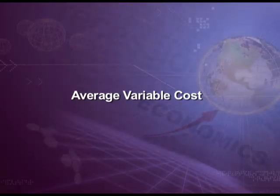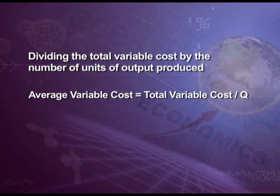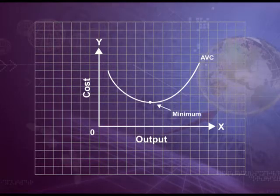Average variable cost is the per-unit variable cost. It is found by dividing total variable cost by the number of units of output produced. Symbolically, AVC = TVC / Q, where Q is the number of units produced. Average variable cost normally falls as output increases from zero to normal capacity output due to increasing returns. But beyond normal capacity output, average variable cost will rise steeply because of the law of diminishing returns. If we draw an average variable cost curve, it will first fall, reach its minimum, and then rise — it is a U-shaped curve.